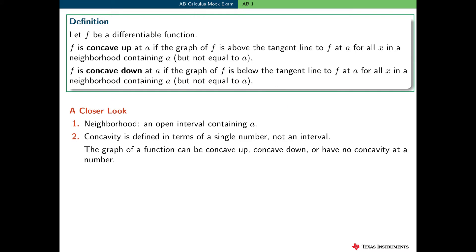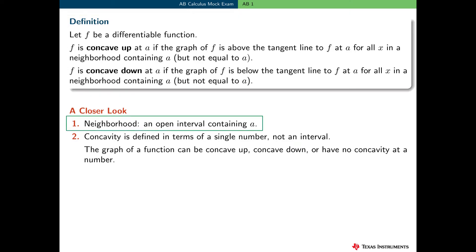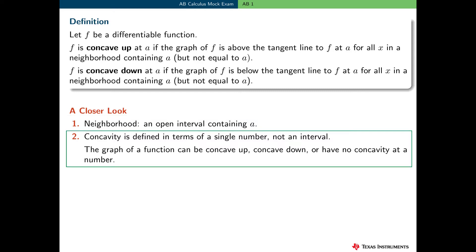This definition is given in terms of the tangent line. It says if f is a differentiable function, then f is concave up at a if the graph of f is above the tangent line to f at a for all x in a neighborhood containing a, but not equal to a. Similarly, f is concave down at a if the graph of f is below the tangent line to f at a for all x in a neighborhood containing a, but not equal to a. Note that a neighborhood is just an open interval containing a, and it doesn't have to be symmetric about a. Also, concavity is defined at a single number, not an interval, like increasing and decreasing. So the graph of a function can be concave up, concave down, or have no concavity at a number.